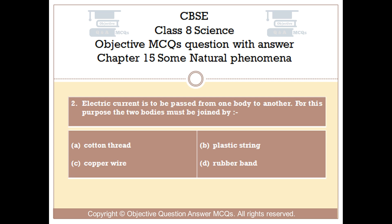Question number 2. Electric current is to be passed from one body to another. For this purpose, the two bodies must be joined by: Option A, Cotton thread. Option B, Plastic string. Option C, Copper wire. Option D, Rubber band.